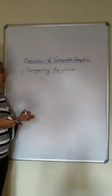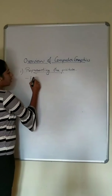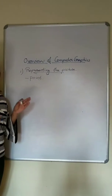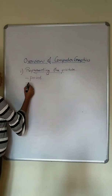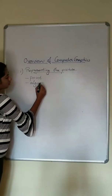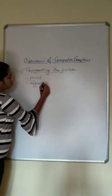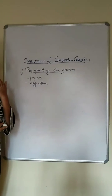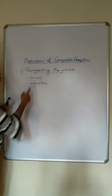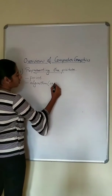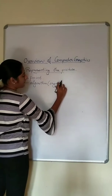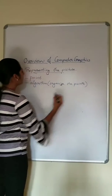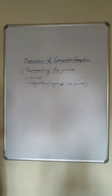In representation, we can say that the point is the fundamental building block of a picture. Equal importance is also given to the algorithm. So, point and algorithm are the basic building blocks of the picture. The algorithm is the one that describes how to organize these points.